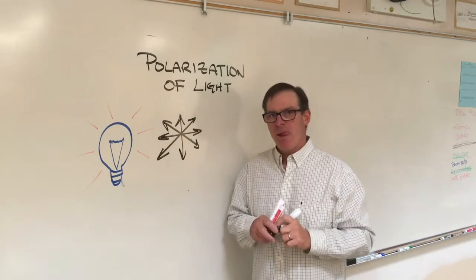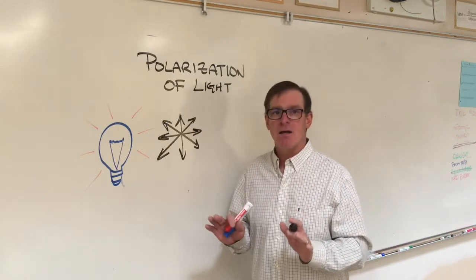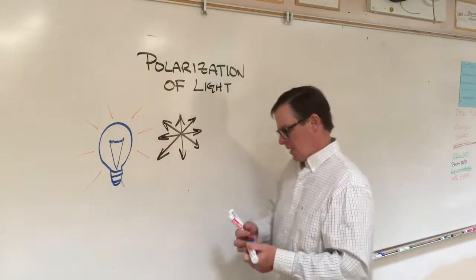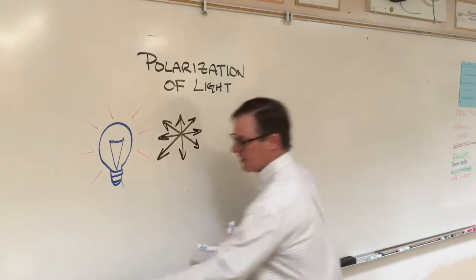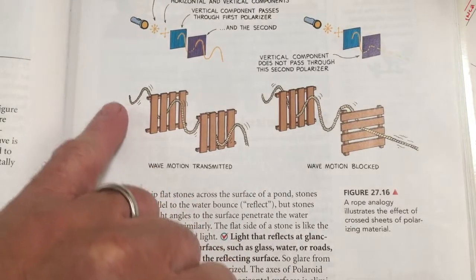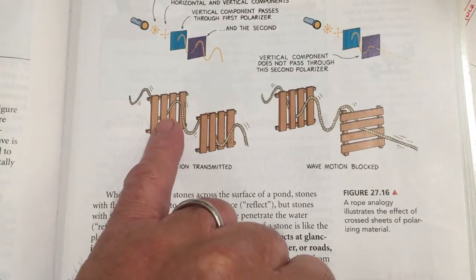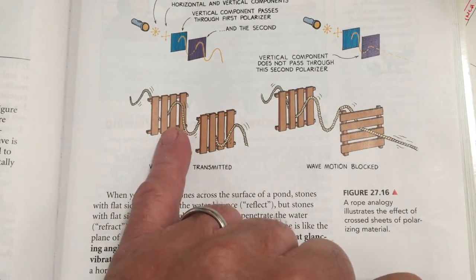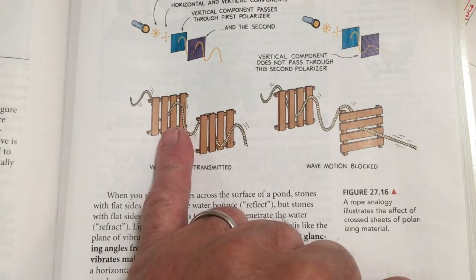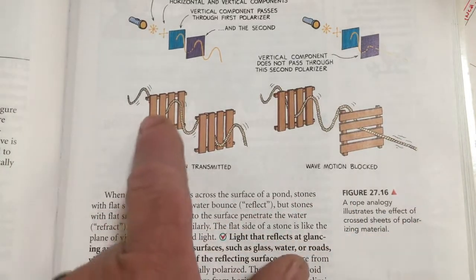However, there are materials that we can pass the light through that block light that is not oscillating in one of those directions. And a lot of times we use this picket fence analogy. In your textbook, they use this picket fence analogy. Imagine you're jiggling this rope vertically up and down and it's allowed to pass through the gaps on a picket fence. We kind of talk about this fence acting as a polarizer. It doesn't let through light that isn't vertical because the fence slats are oriented vertically.